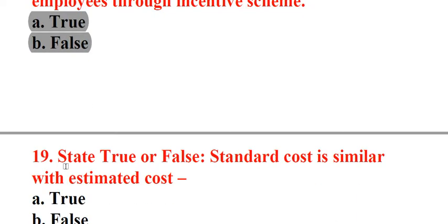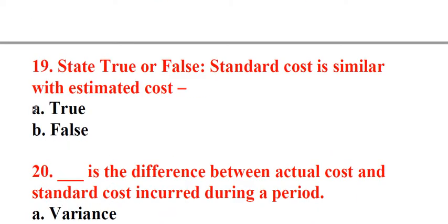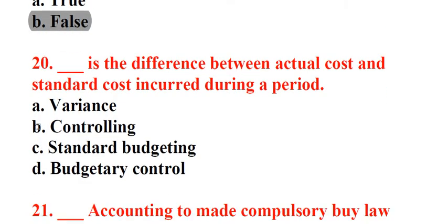Question 19: State true or false. Standard cost is similar with estimated cost. A. True, B. False. Answer: B. False. Question 20: Underscore is the difference between actual cost and standard cost incurred during a period. A. Variance, B. Controlling, C. Standard budgeting, D. Budgetary control. Answer: A. Variance.